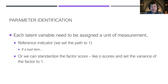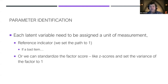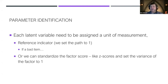Parameter identification is a requirement for CFAs. When measuring depression or happiness, we have to assign the latent variable a unit of measurement since it doesn't have one. We can either set a reference indicator — fixing that path to one — or standardize the factor by setting its variance to one, like z-scores. We'll talk through this with actual data.